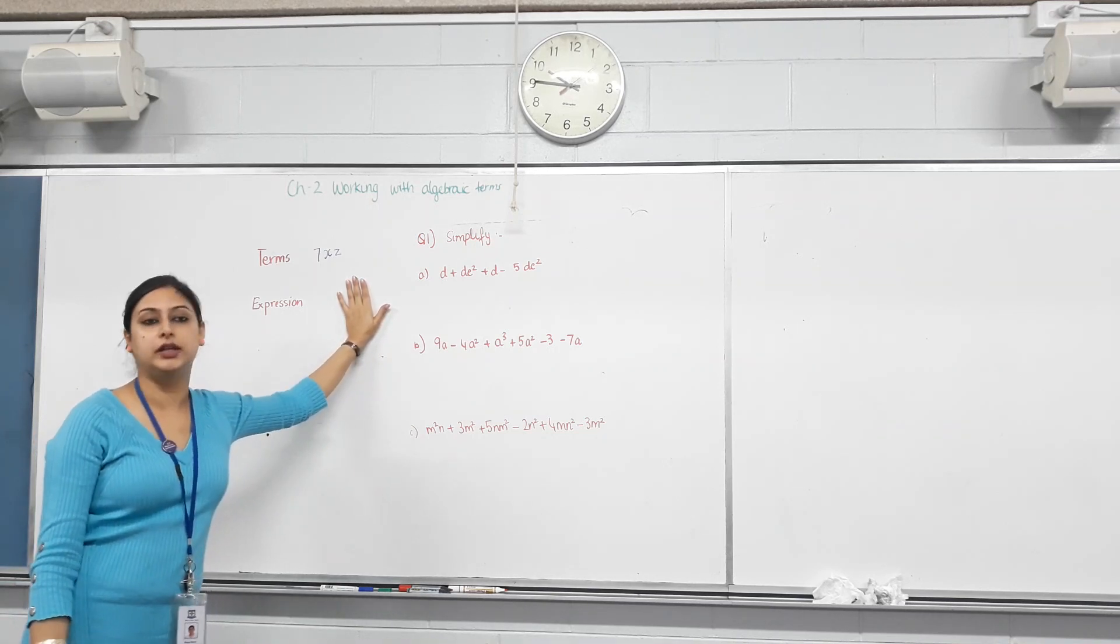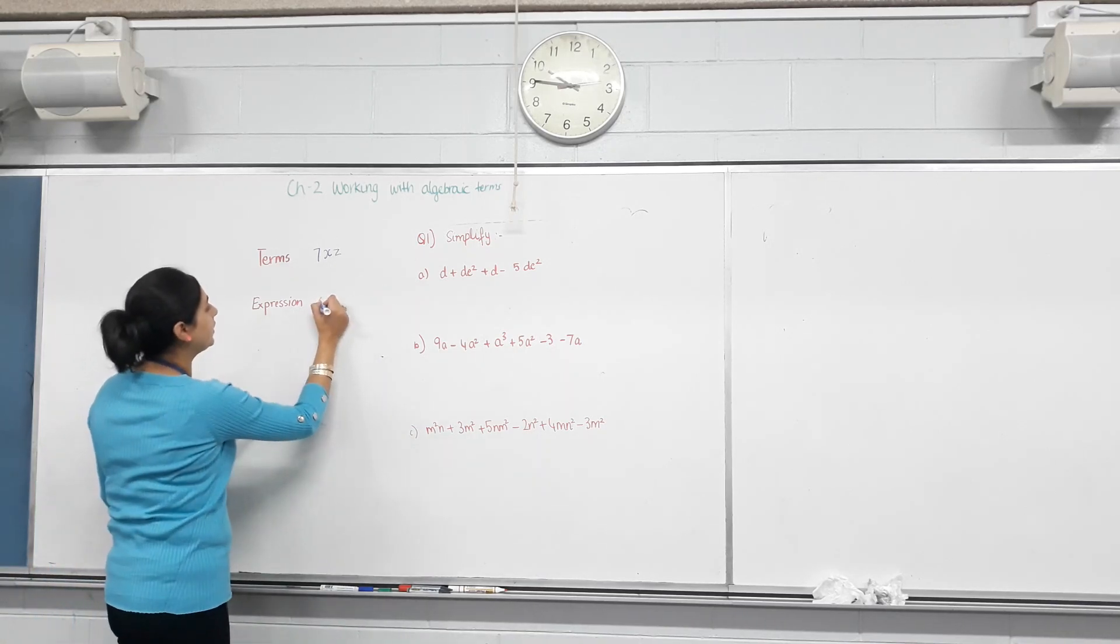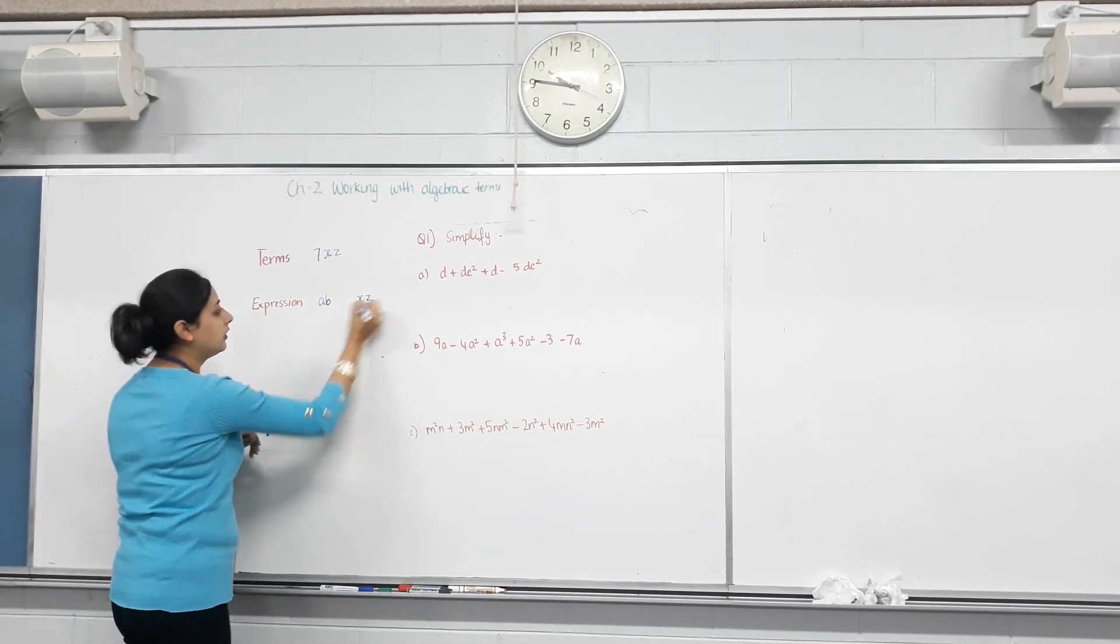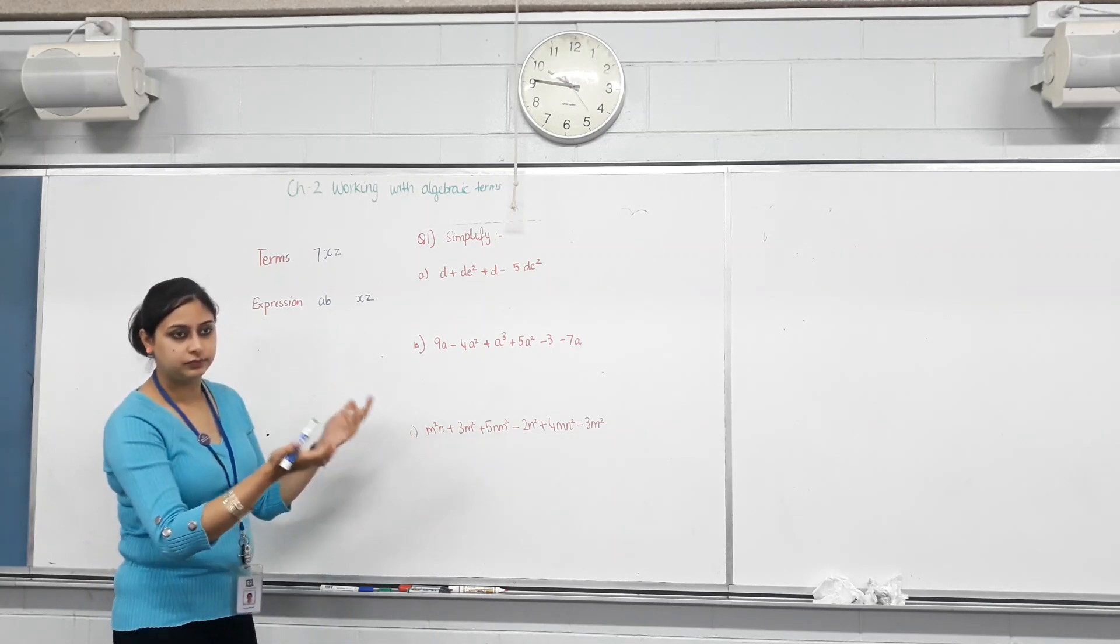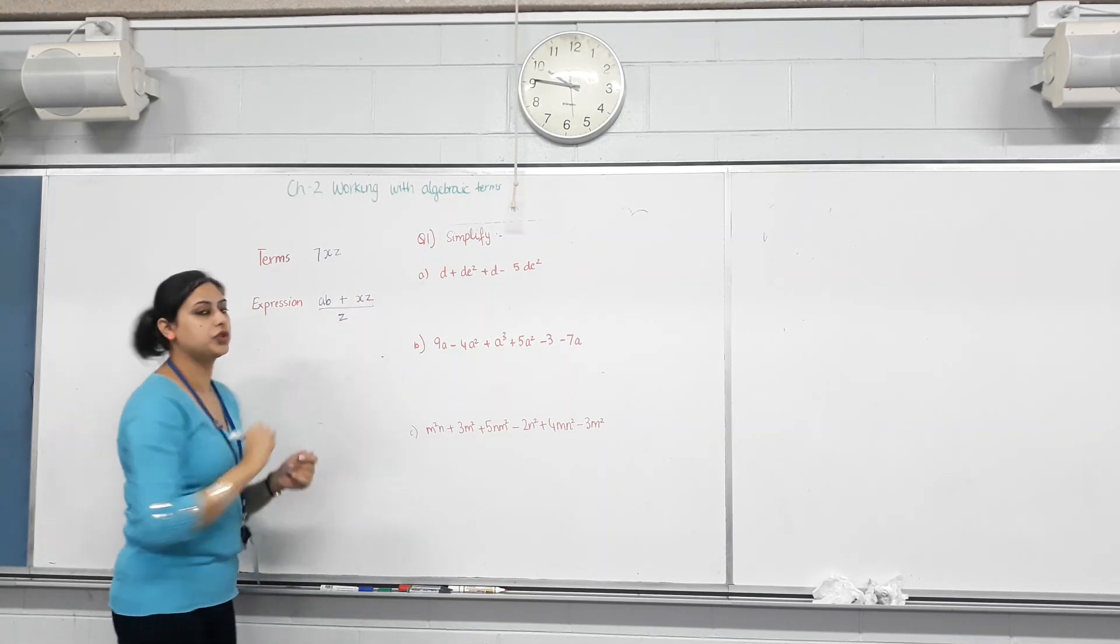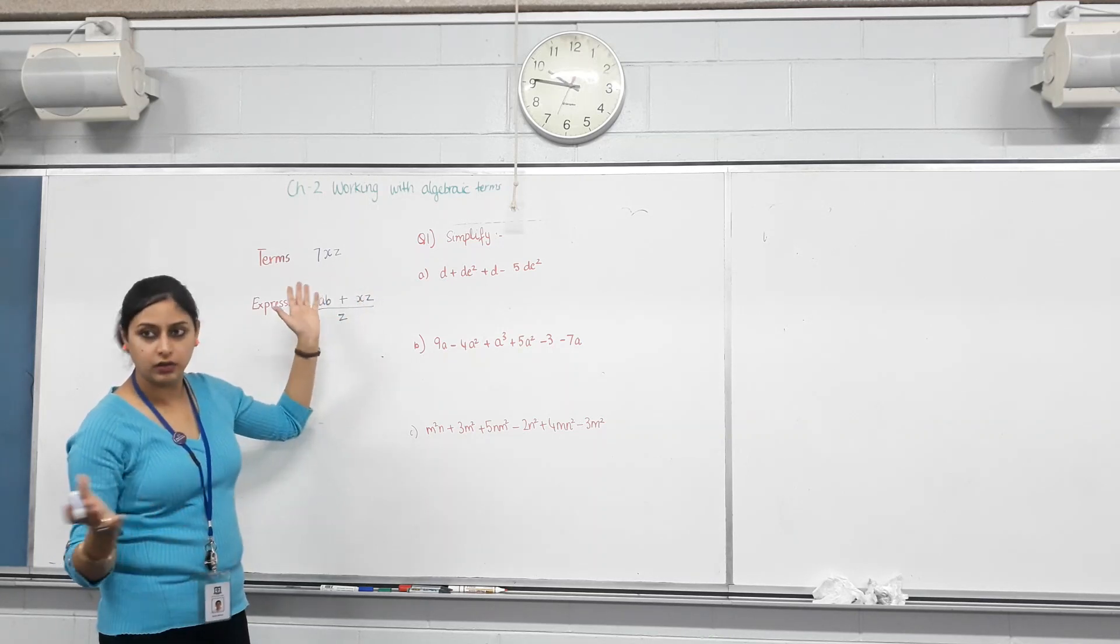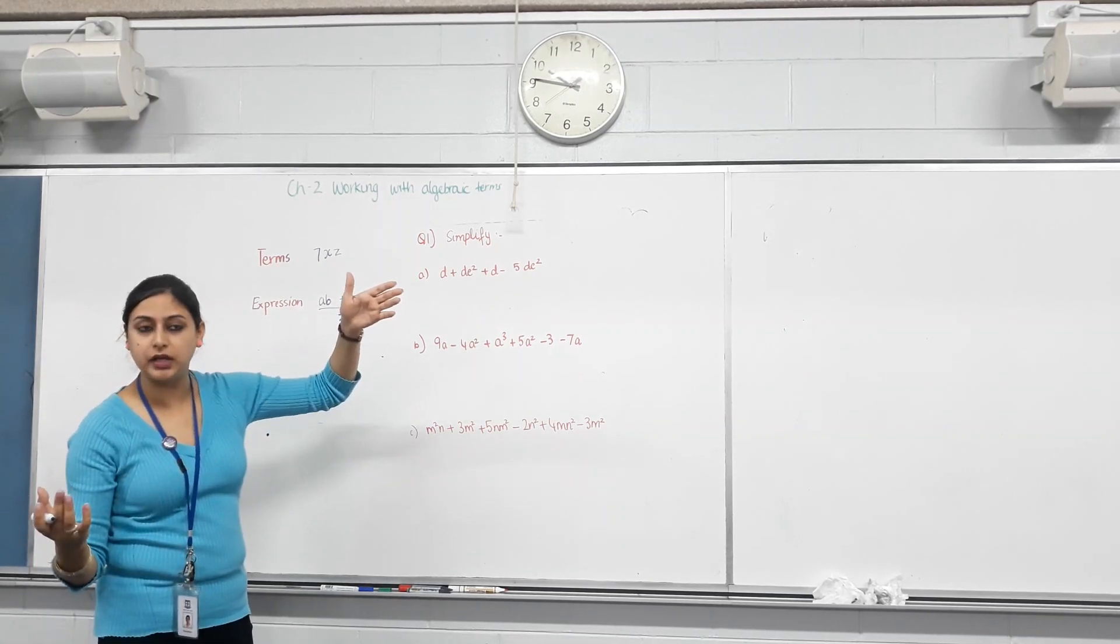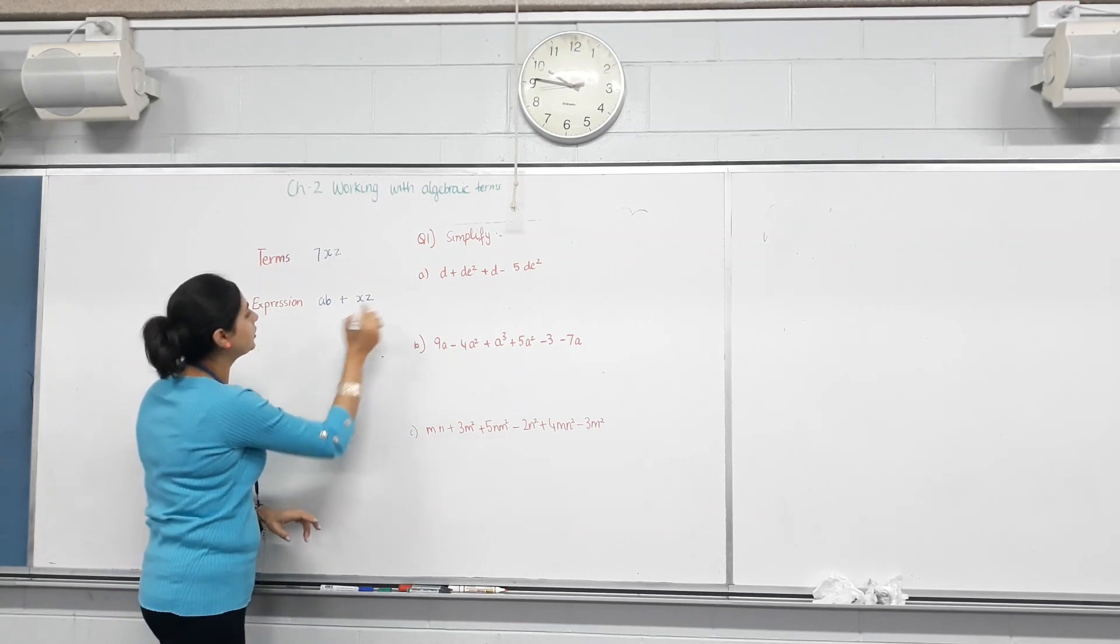What is the expression then? A collection of terms. A collection of terms, well done. So let's say I have a term AB. Is that a term? Yeah. Then I have another term XZ. So how do we collect them? What sign do we put? Multiply, divide, adding. Is that an expression? Yes. So we've got two. How many terms are there? We're adding them, dividing them. We can subtract as well. That is an expression. Again, let's write an easy one, just plus and minus first.